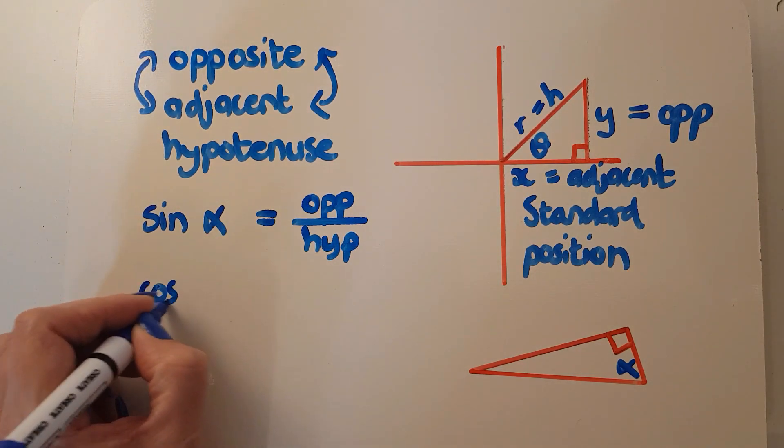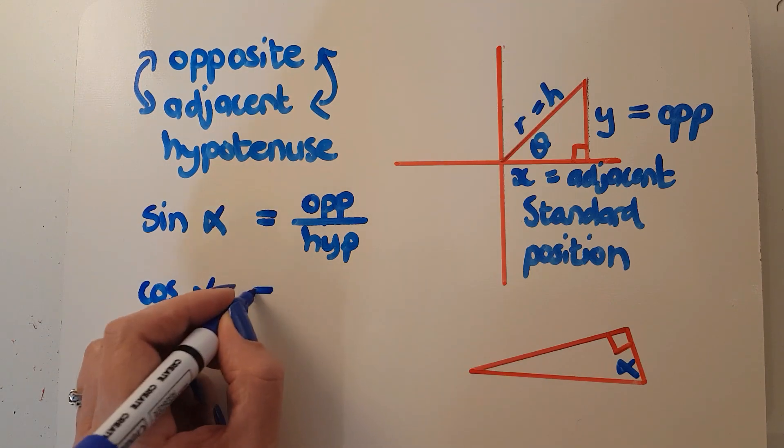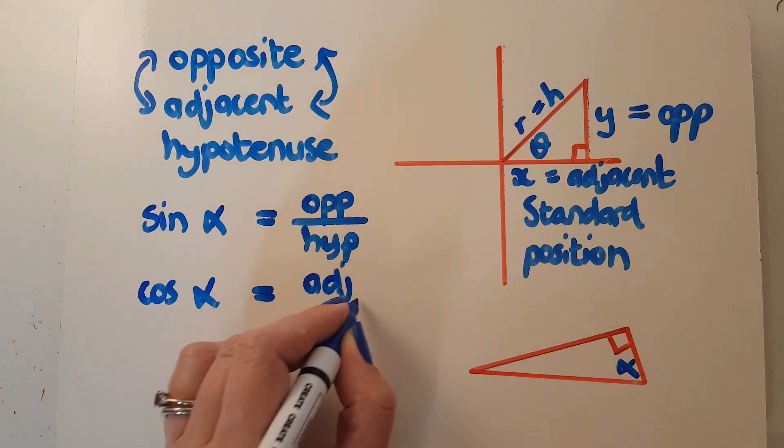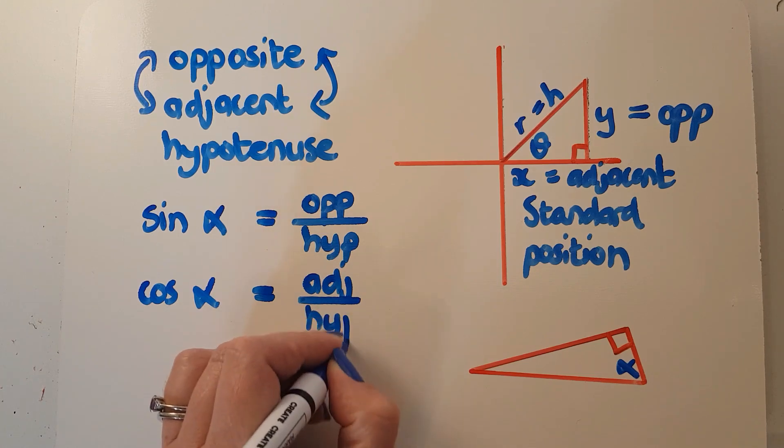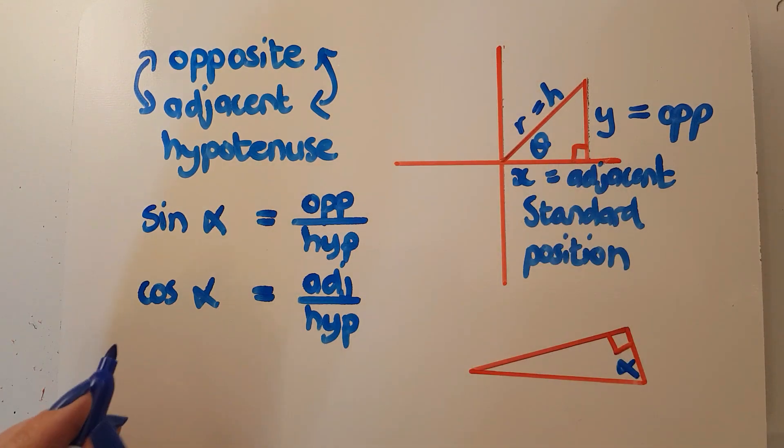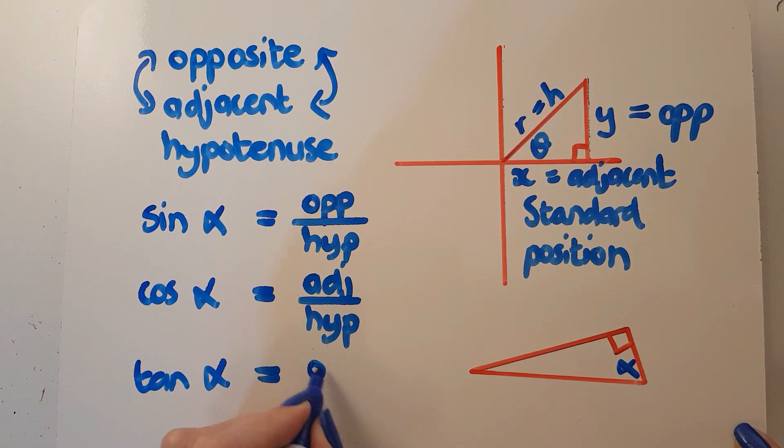And your cos function of alpha is adjacent over hypotenuse. So you can see that where I used to have r, I now have h. So the radius is always the hypotenuse, but it's not the same with x and y. My tan of alpha is going to be opposite over adjacent.